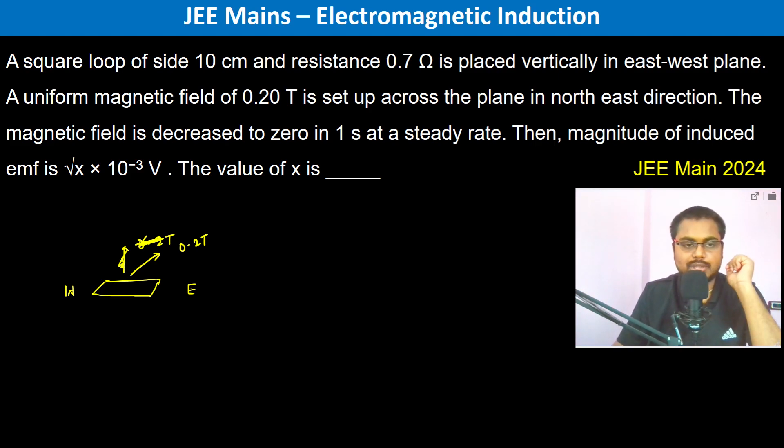Then the magnitude of induced EMF is, so induced EMF is going to be minus d(Phi)/dt. So Phi initial is going to be B dot A.